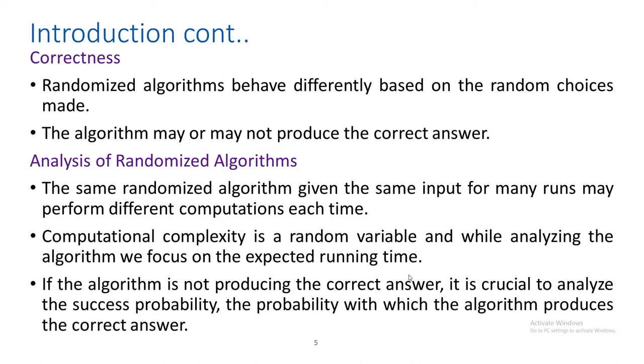First, you analyze the probability of success of the algorithm. Then the next aspect is the running time. For the same input, when you run the algorithm repeatedly with different choices of random numbers, the algorithm may produce different output. So the running time is a random variable — in one execution it may skip some steps, in another it may not. So for that random variable, you find the expected running time.